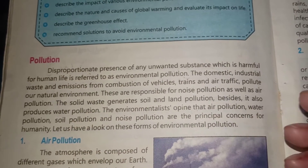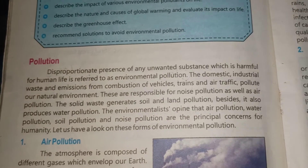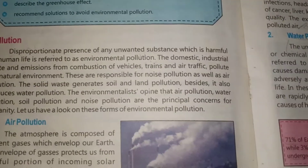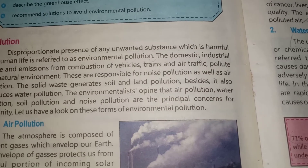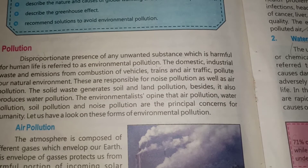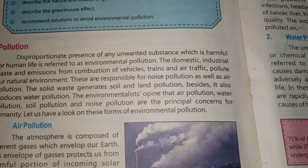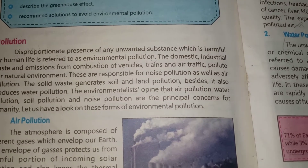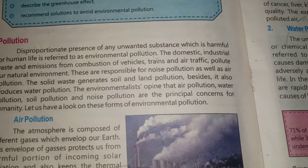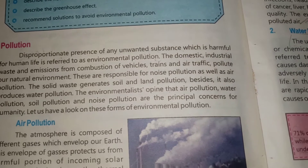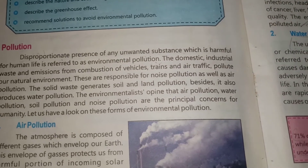Disproportionate means that the proportion will not exist in its normal balance. For example, we have seen air pollution, water pollution, soil pollution, and noise pollution. In air pollution, the upper part of the surface contains gases, which should exist in a certain proportion.